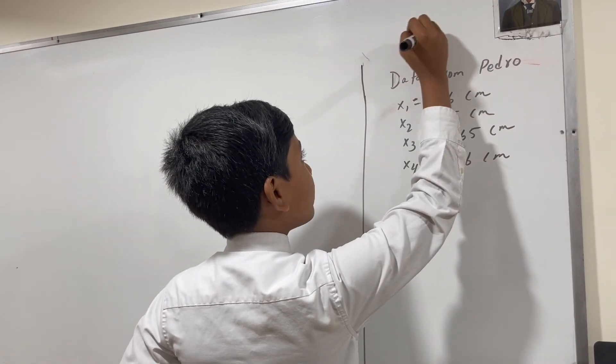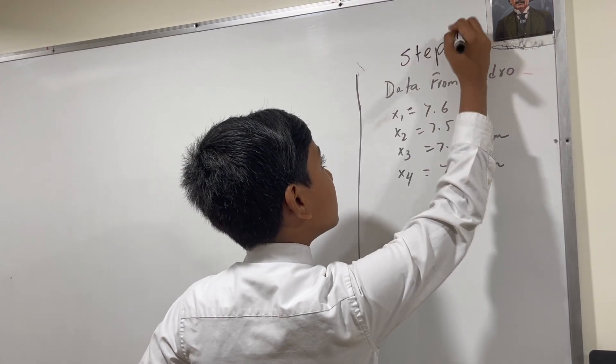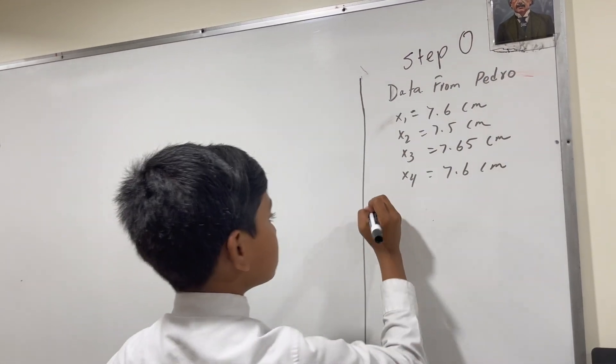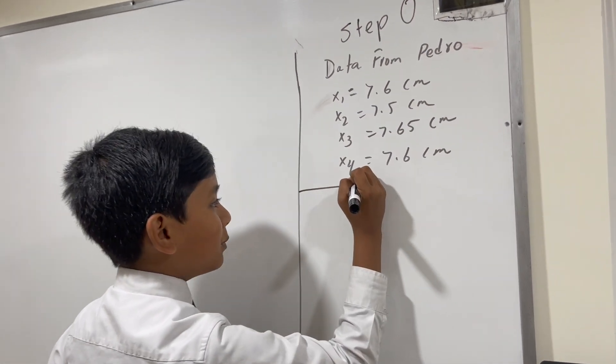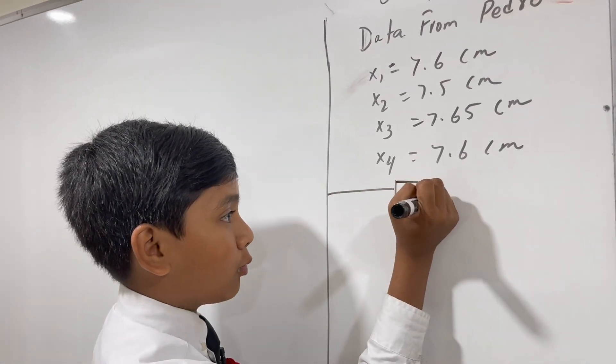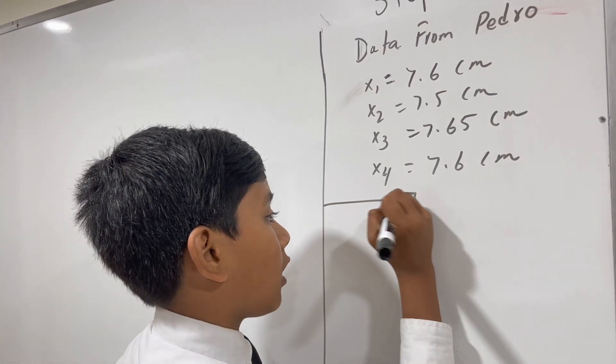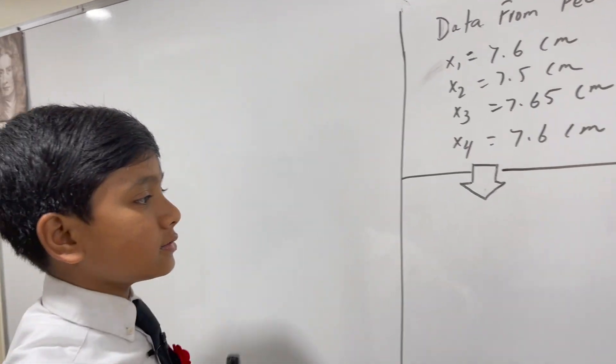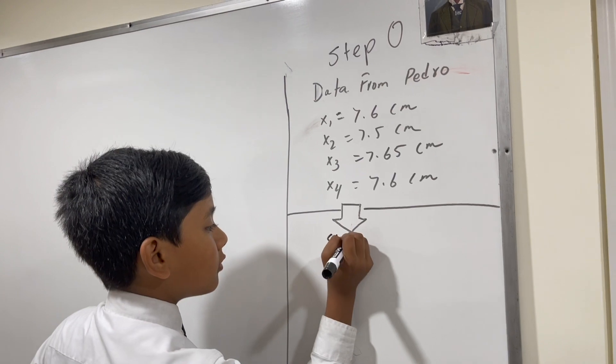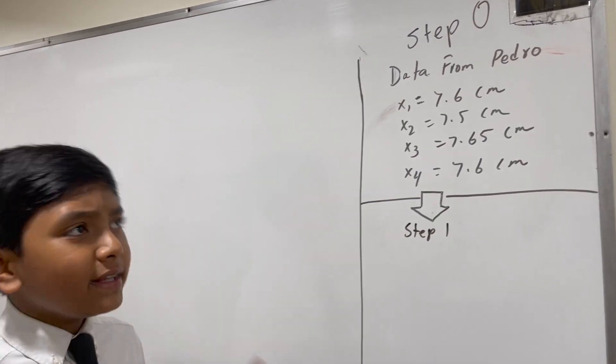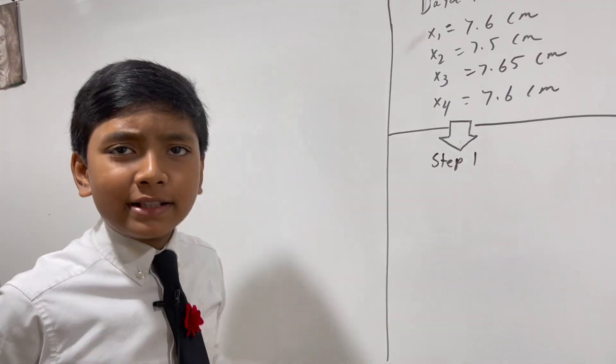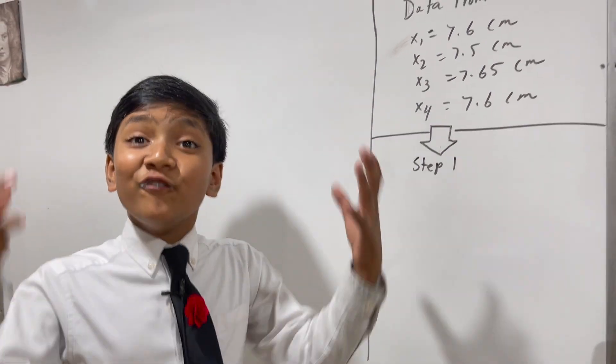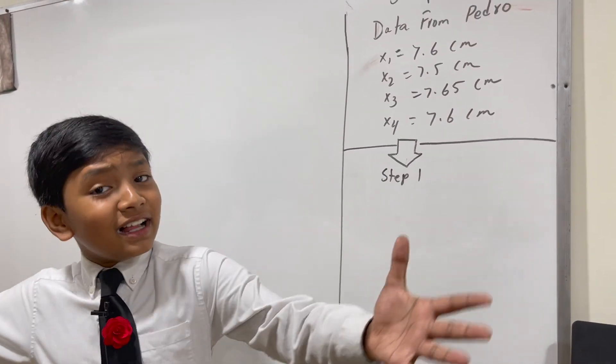So we've already obtained the data, but now we're going to have to move on to step one of our process. Alright, so what is step one? Well, right now we have four measurements. What are we supposed to do? Take four areas? Hell no!